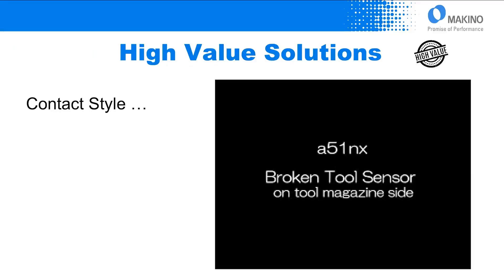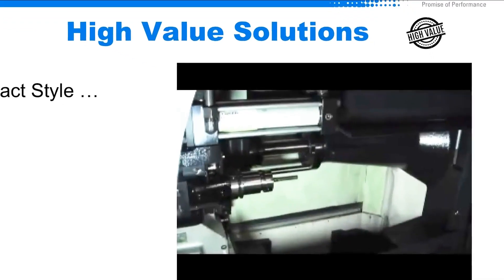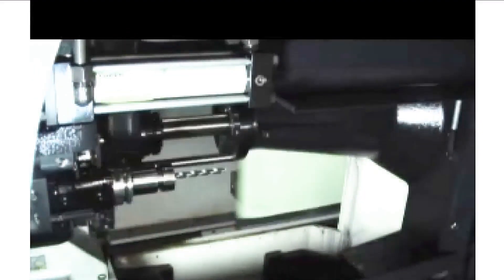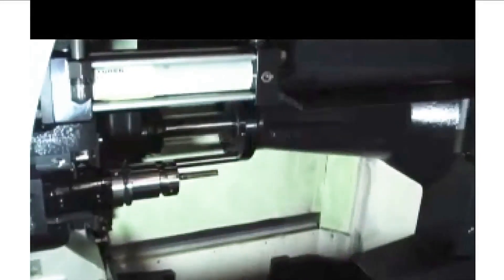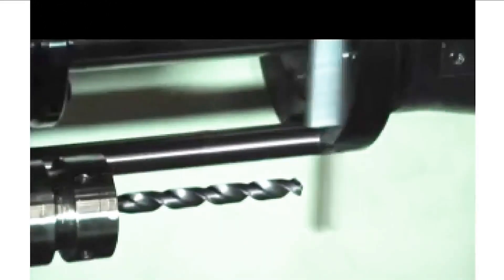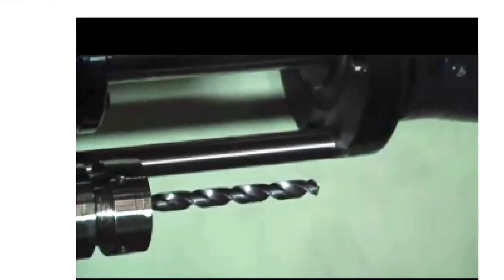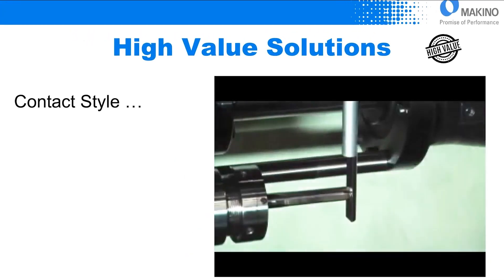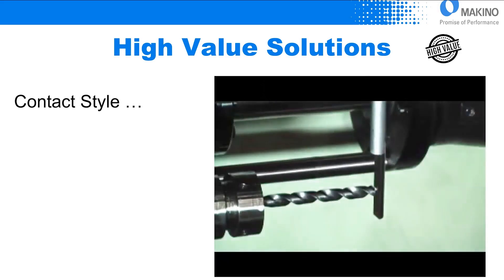Contact style is very common in the marketplace. In this particular circumstance, this is a solution that Makino has offered for many years — what we call the broken tool sensor outside the machining area, or BOTSOMA as we call it internally. What's happening here: as this cycles through, a tool changes out of the spindle into the tool magazine side. The measurement, instead of happening in the machining area, is happening out in the tool magazine while the next tool is already in position in the spindle, getting ready to enter into its feed move. The device contacts the tool tip, the determination is made whether the tool is broken or not, and if it's not, that next tool enters the cutting cycle — eliminating the cycle time impact by taking that measurement external.